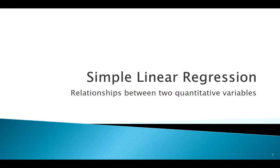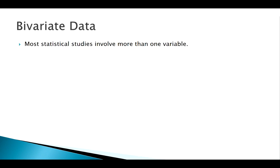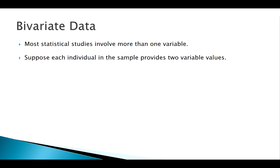Welcome back. Today we're going to look at some ideas of regression. These methods apply when we're looking at bivariate data — two variables. A lot of the methods we've been looking at deal with one variable, maybe comparing two groups with a single variable, but the world isn't that simple. Most studies have a whole bunch of variables, and we want to see if there are any relationships. We'll keep it to two for now — bivariate.